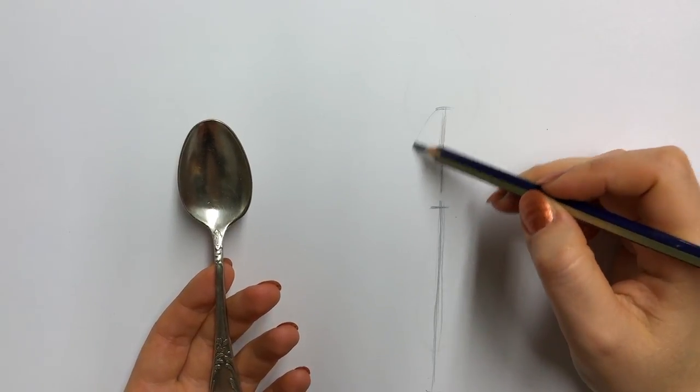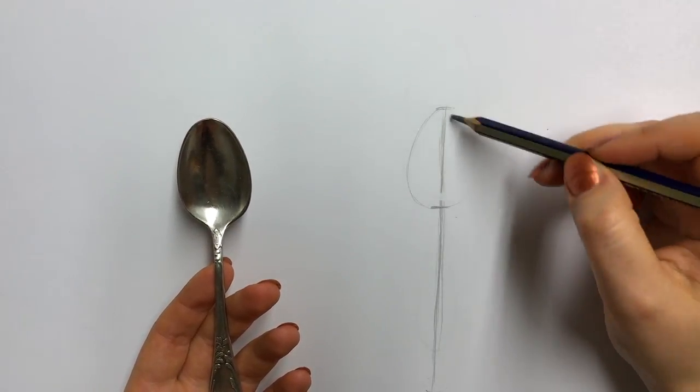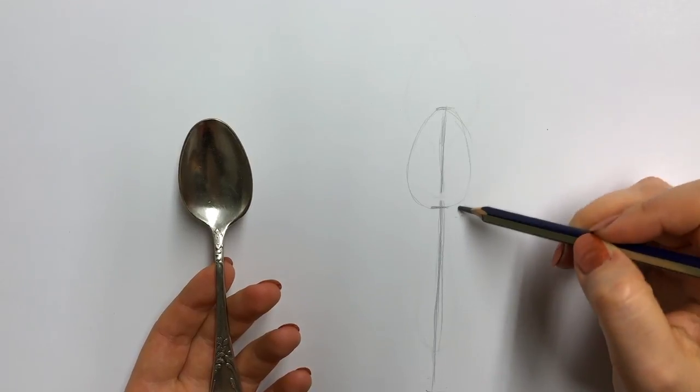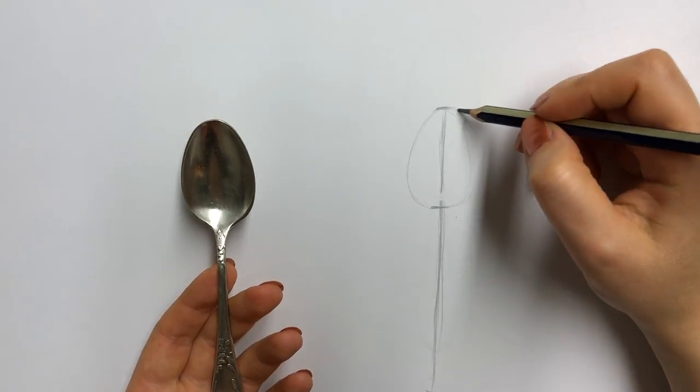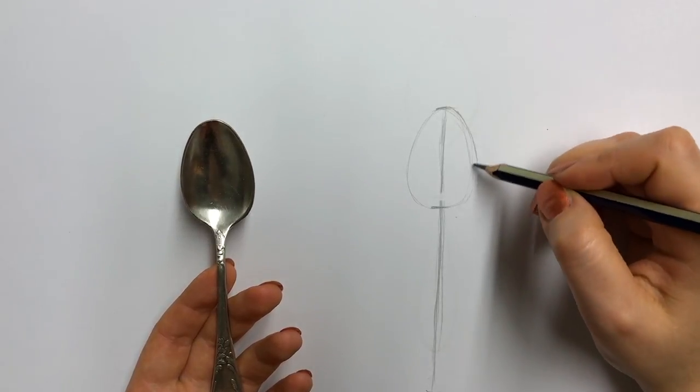So this is like an oval, right, sort of egg-shaped oval. If you want to, if it's easier, you can actually put an oval and then shape it. I'm just going to put sort of the egg shape straight away.